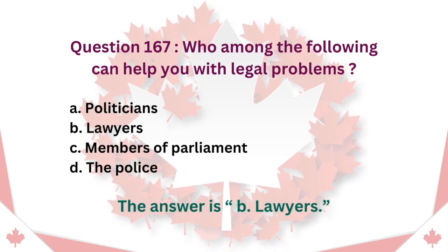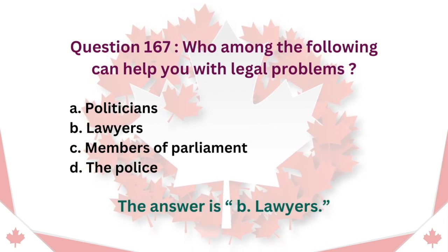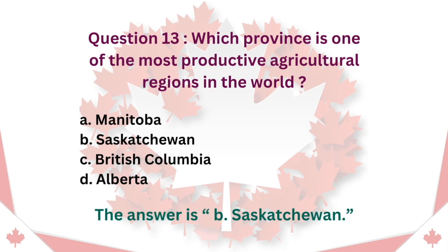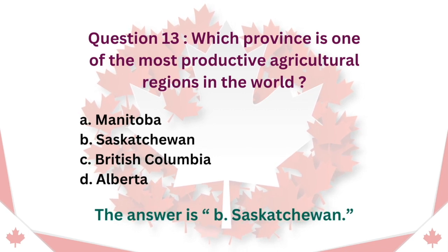Question 167: Which province is one of the most productive agricultural regions in the world? A. Manitoba. B. Saskatchewan. C. British Columbia. D. Alberta. The answer is B. Saskatchewan.